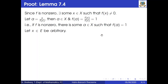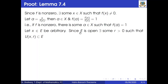Let x belong to e be arbitrary. Since e is open, there exists some r greater than 0 such that the open ball about x with radius r is a subset of e.